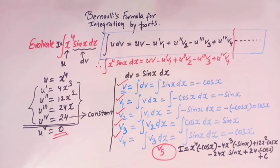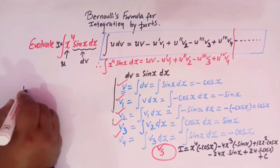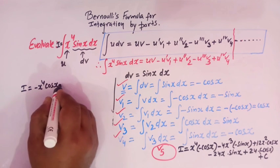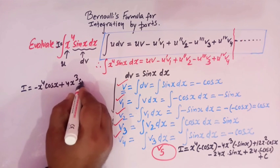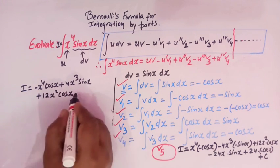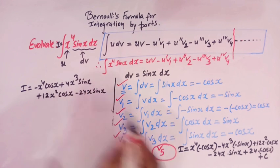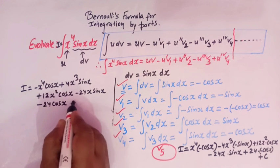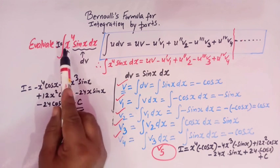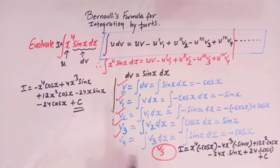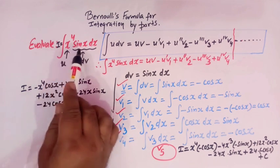C is the constant of integration. Simplifying: I = −x⁴cos(x) + 4x³sin(x) + 12x²cos(x) − 24x·sin(x) − 24cos(x) + C. So viewers, this is the integral of x⁴·sin(x) dx. This is how we see how useful Bernoulli's formula is for integrating such functions.